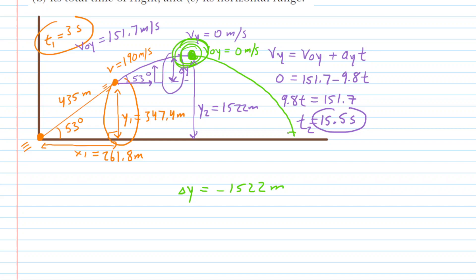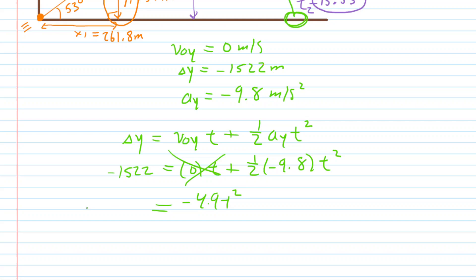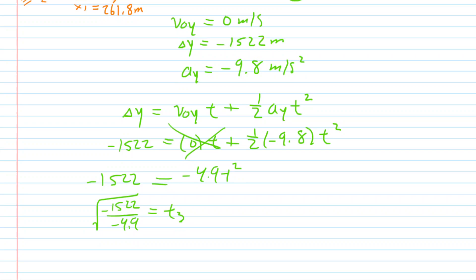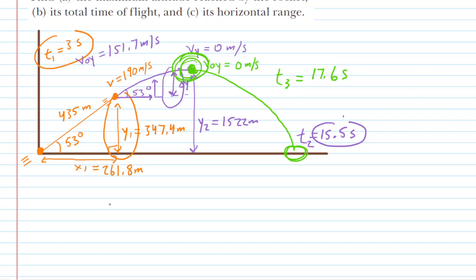Using the kinematics equation and plugging in the known values for the green segment, the initial velocity term zeroes out. Simplifying the right-hand side gives negative 4.9 t squared. Dividing both sides by negative 4.9 and taking the square root, we get t3 equal to about 17.6 seconds. Now we can get the total time by adding t1 plus t2 plus t3.